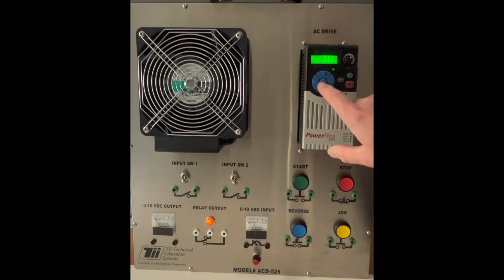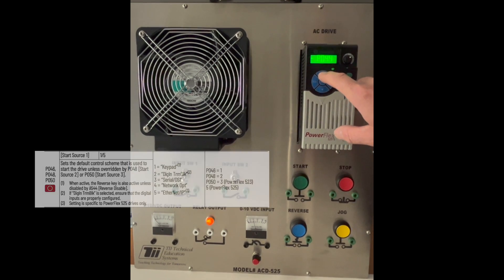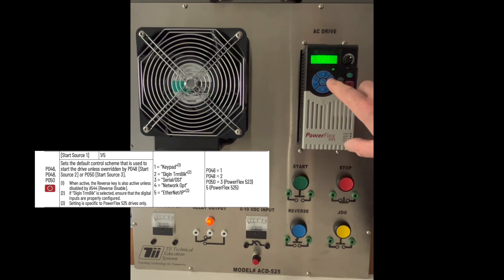So to do this, we're going to go ahead and hit the Select key. We're going to go into Basic Parameters for the P and then we're going to hit Enter. We're going to go up to 446 and then hit Enter.